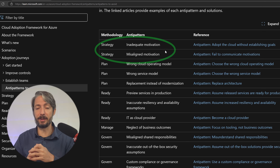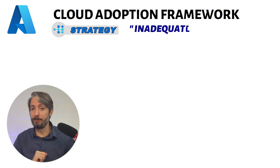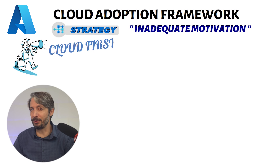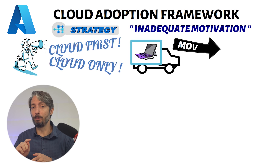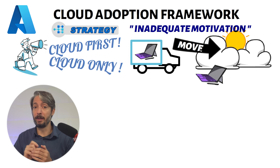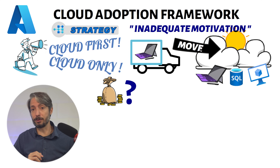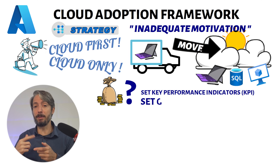We'll start with the first two, which fall under strategy. The first anti-pattern is called inadequate motivation. Many companies announce a cloud-first or cloud-only strategy not knowing exactly what it means nor how to measure it. An example is a company announcing to have all their systems move to the cloud within a year. At the end of the journey, all systems are in the cloud — but at what benefit or at what cost? There needs to be a tangible benefit that can be measured. To avoid this anti-pattern, KPIs and goals need to be defined so that success can be measured.